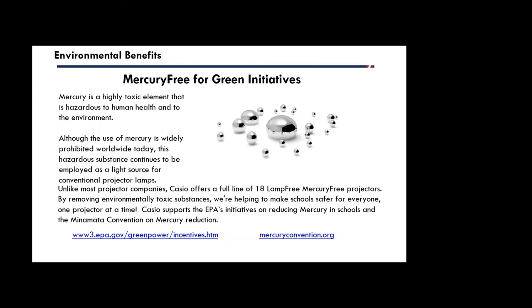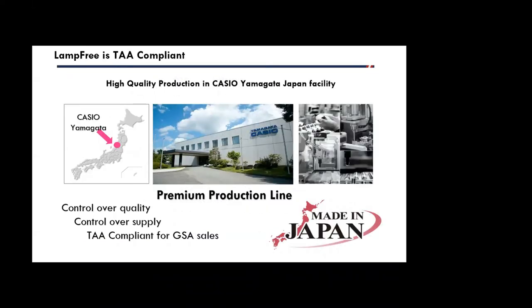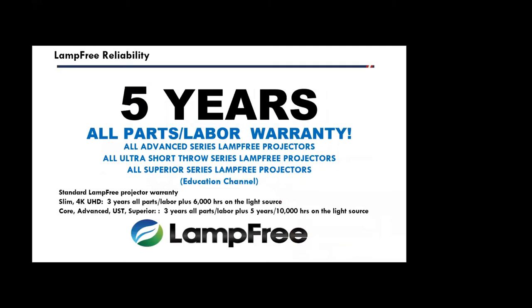So the last thing you want is a bulb that—if a bulb was to break, obviously it has mercury content in there. That's the last thing that you would want in a classroom. So 10 years ago, we saw this was the future and that's why we started out with one projector and the following year we went across the whole line because it was such a successful type of technology versus the lamps. Initially, many of our products were made or parts of the products were made in China. So in 2014, our products were moved to Japan. So not only do we have more control over quality and supply, but TAA compliant for GSA sales.